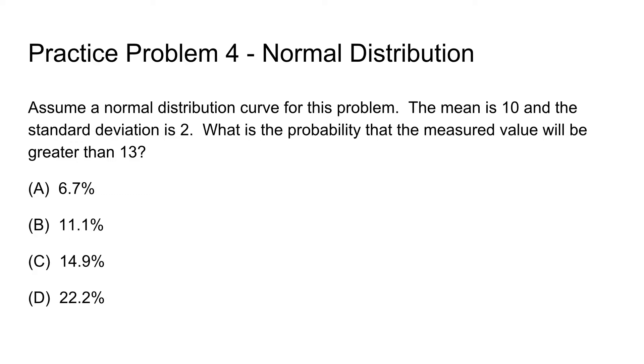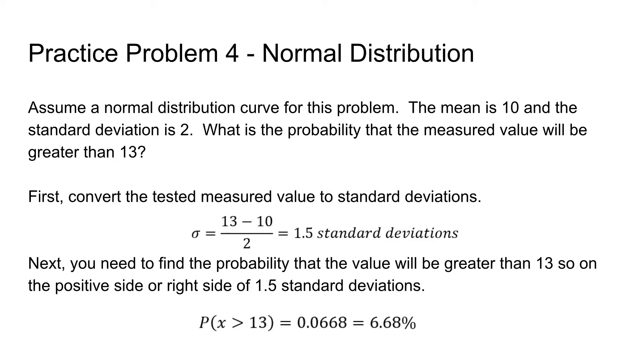For a normal distribution, you need to first convert your tested measured value of 13 to standard deviations, because the normal distribution table is shown in standard deviations. We find out that 13 is 1.5 standard deviations away from the mean.